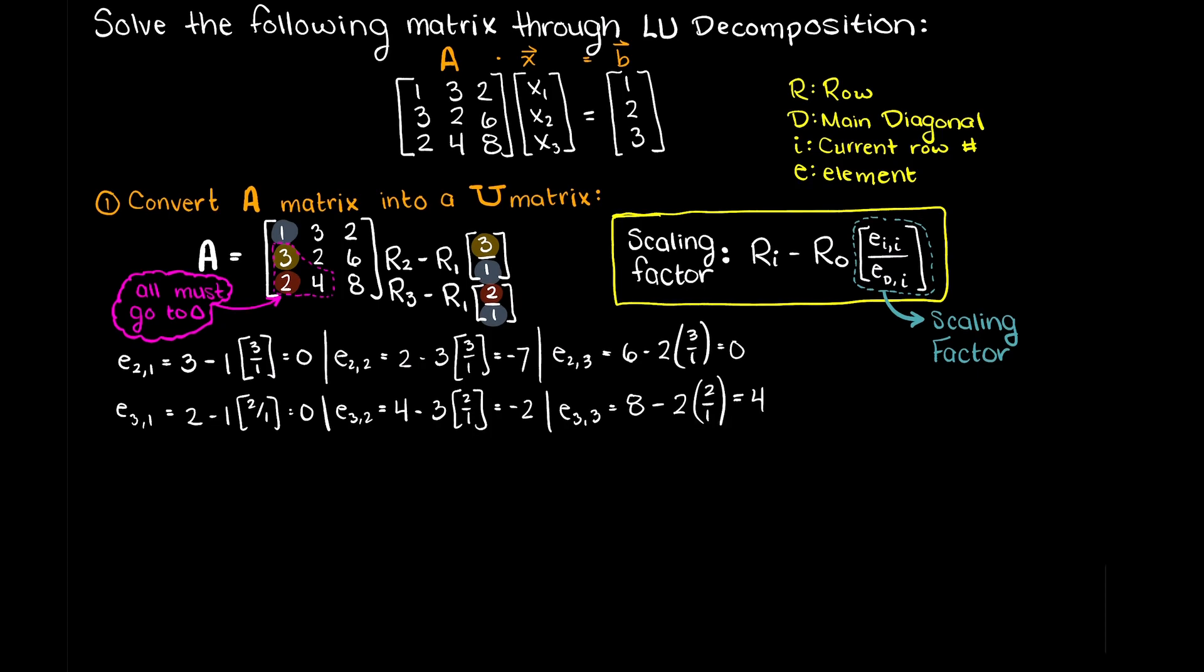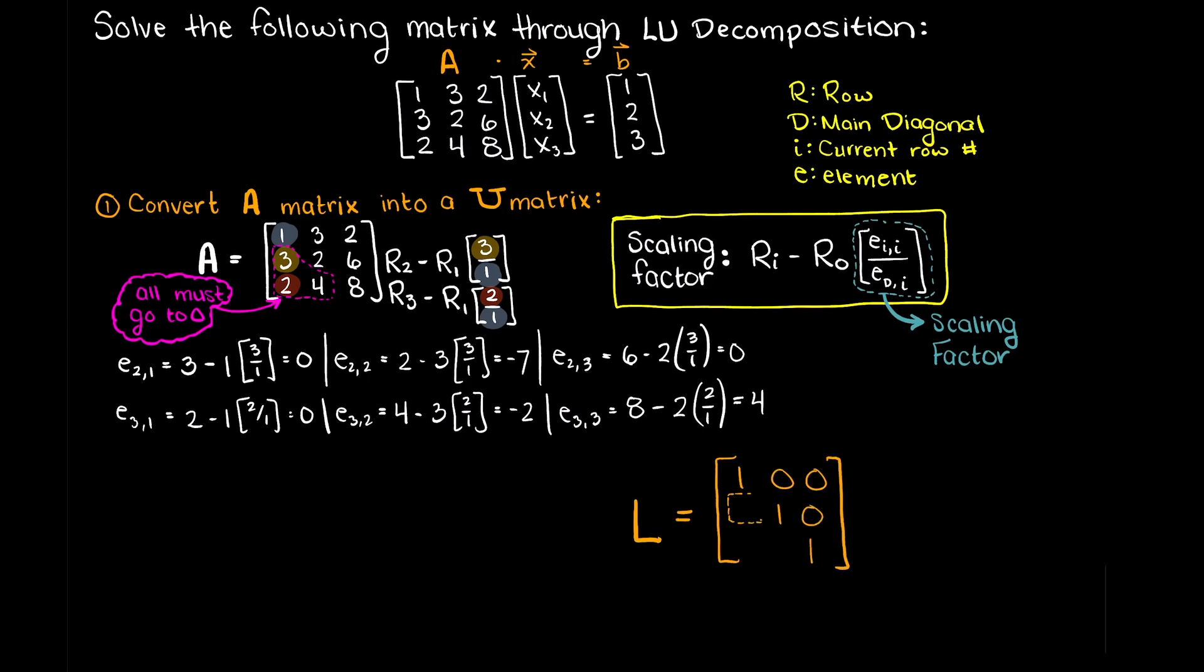At this point we can also begin constructing our L matrix, which looks like this and we have three spots to fill for a 3x3 matrix, and we actually have two of them already here as we are going to fill these spots with the scaling factors we've been finding. Alright, so as you can see we now have our first column just how we want it.